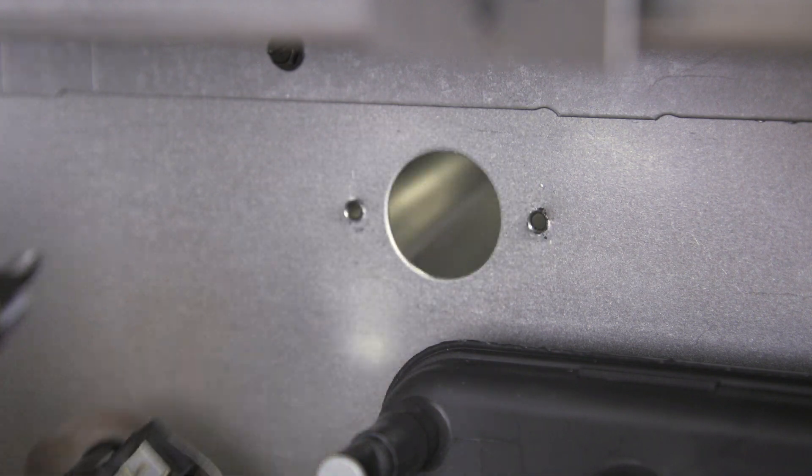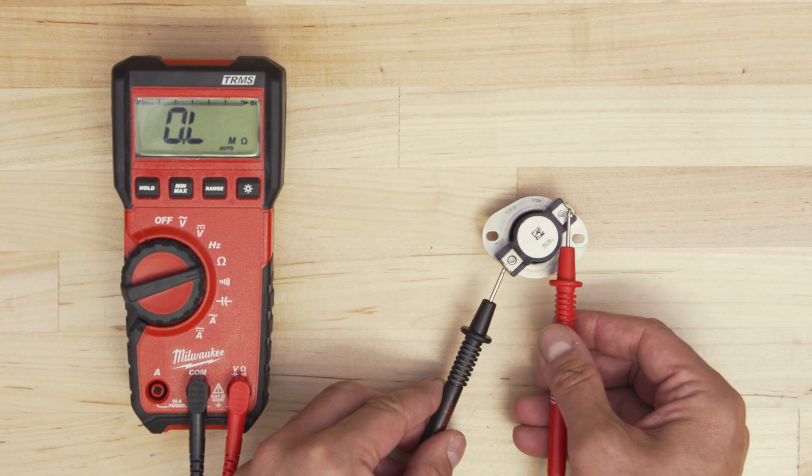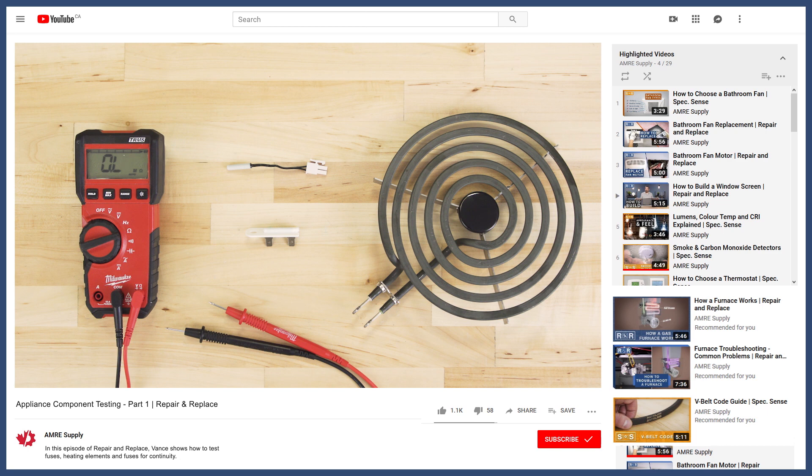Understanding these components can help you troubleshoot your appliances. In part 1, we learned how to do a continuity test to see if a component has failed, and then looked at fuses, heating elements, and thermistors. You'll find part 1 linked in the description below.